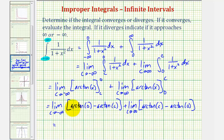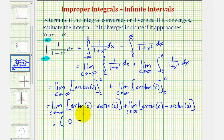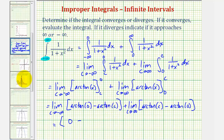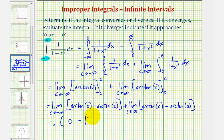For arc tangent zero, we're looking for an angle that has a tangent function value of zero. Looking at the graph of the tangent function, notice how the tangent function value is zero where theta, the angle, is zero. So here we'd have zero minus — now as c approaches negative infinity, we're looking for an angle such that the tangent function value would be approaching negative infinity. Going back to our graph, notice how the tangent function value is approaching negative infinity as our angle theta is approaching negative pi over two.